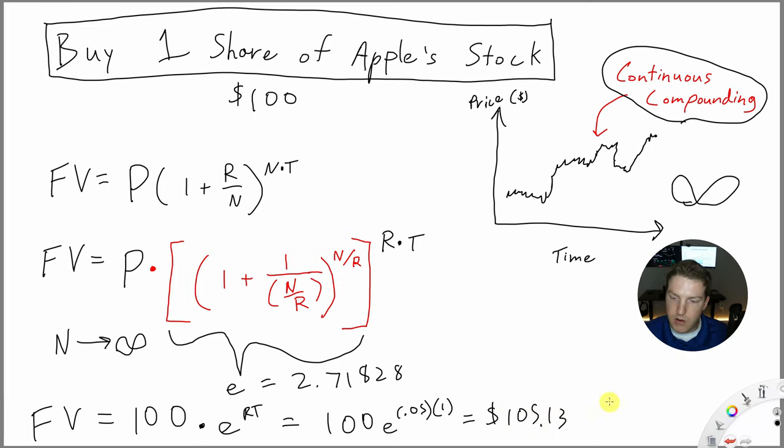This actually gives us $105.13, which gives us an effective interest rate of 5.13% annually, which is greater than the 5.12% when we use monthly compounding. And so as we approach this assumption of infinity and continuous compounding, we end up with the highest effective annual interest rate possible.